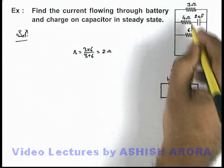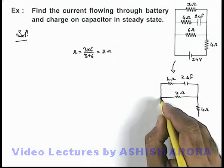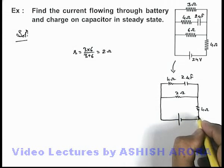Which is the parallel combination of 3 and 6 ohm. And this is another resistance 4 ohm which is connected to a 24 volt battery.